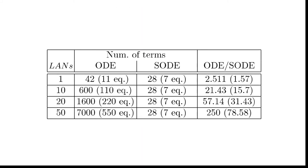In the botnet model, if all the lands have the same probability of being infected, the number of SODIs is 7, with a total of 28 terms, and these don't grow with the number of lands. On the other hand, the number of ODEs, derived from the unfolded model, grows fast. For instance, with 50 lands, the number of equations is 550, with a total of 7000 terms.